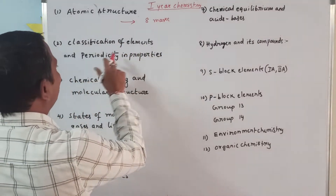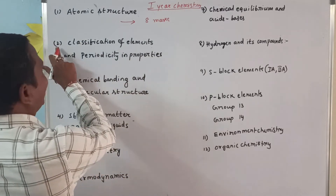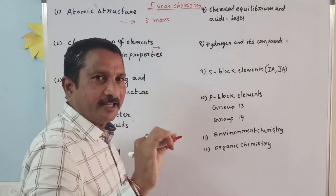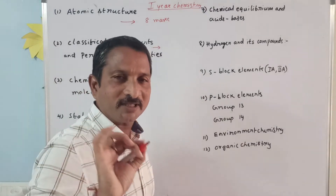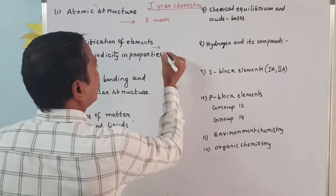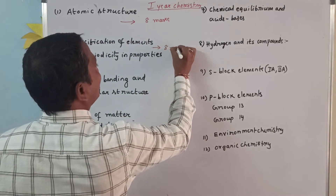Classification of elements and periodicity in properties — second unit. Again, in second unit, there is no two-mark question, there is no four-mark question, only one eight-mark question.